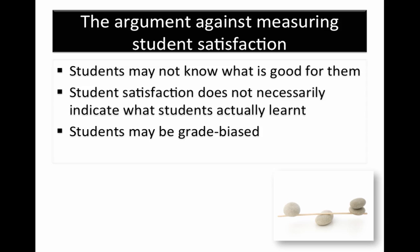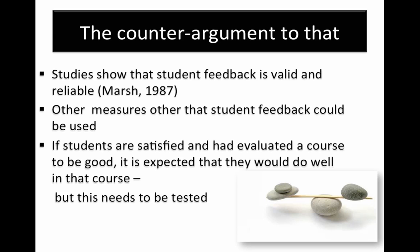There are a number of arguments put up against student evaluation or student feedback. For instance, it is said that students may not know what is good for them. Student satisfaction does not necessarily indicate what students have actually learned, and that students may be grade biased — that is, if they get a high grade, they may rate the course to be good. Several studies have addressed these repeated questions. The paper by Marsh 1987 shows that student feedback is indeed valid and reliable. Other studies suggest that measures other than student feedback of student satisfaction can be used to determine the quality of education — for instance, we could use student performance.